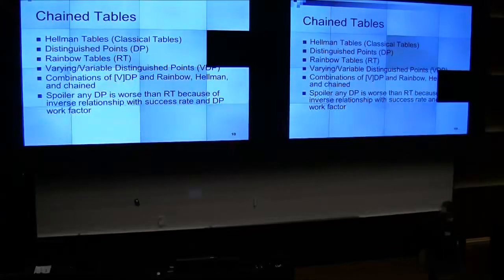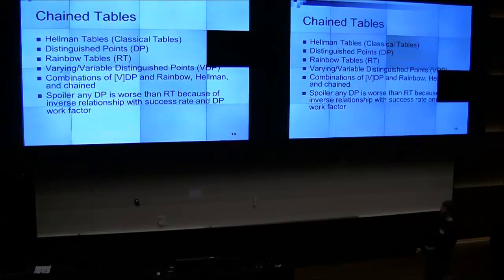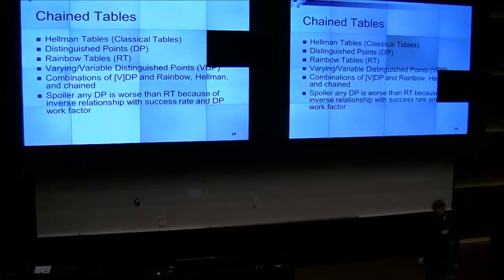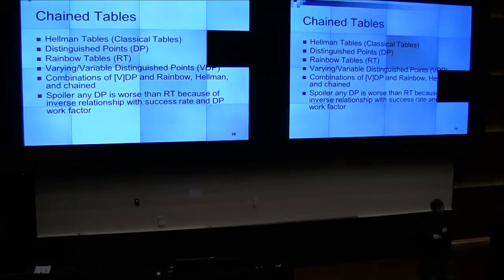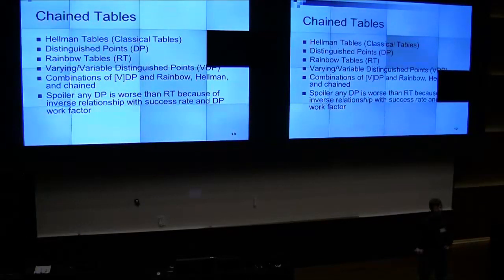Chain tables. This is your common tables: distinguished point, rainbow, varying or variable distinguished point, and combinations of all of those. Spoiler: distinguished point tables are less efficient than rainbow tables, because of the inverse proportion between the DP work factor and the success rate.